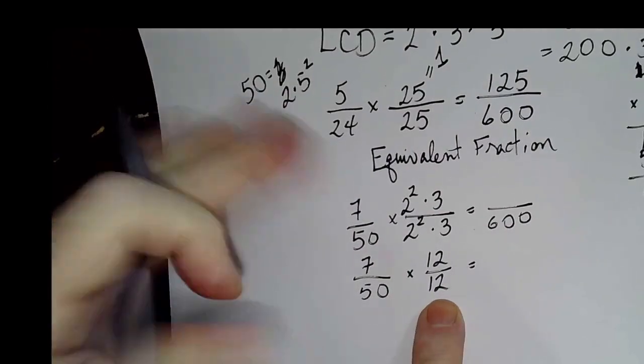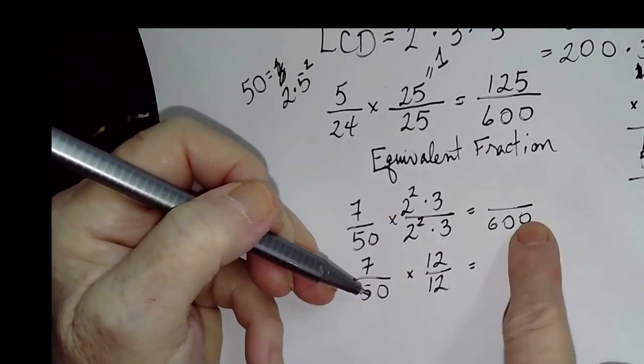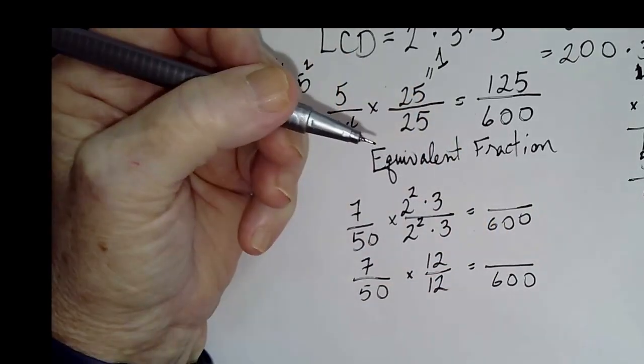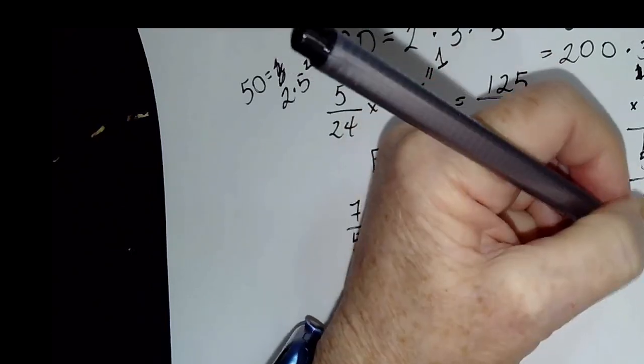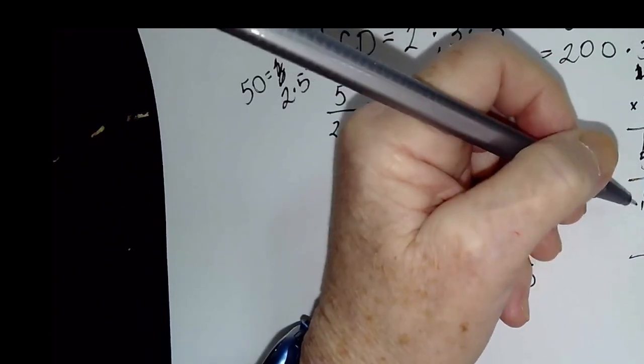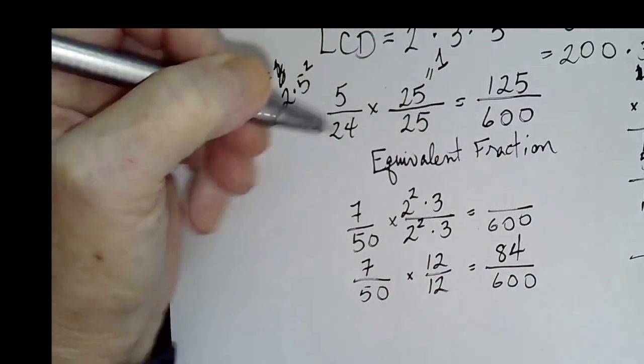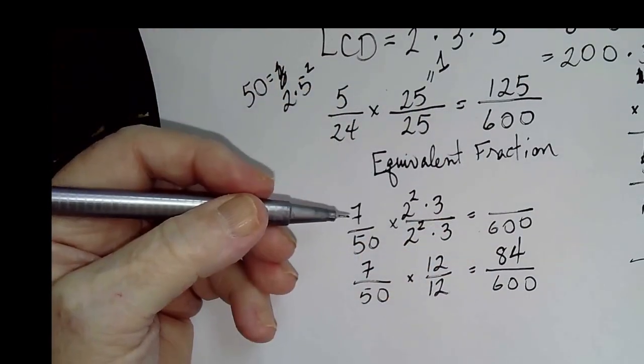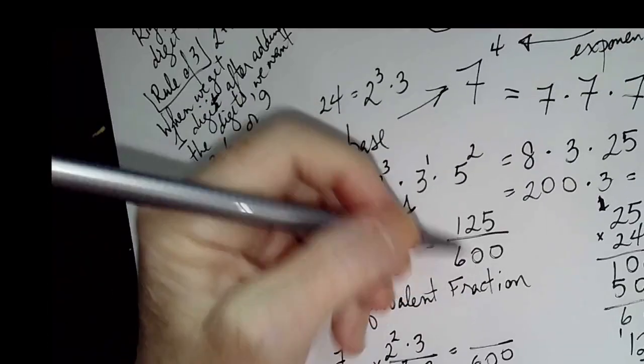If you remember your 12s, 12 times 5 really is 60, and the 0 hangs on. So we're good. 12 times 7. 7 times 2 is 14. 7 times 1 is 7, plus 1 is 8. So our two original fractions were 5 over 24 and 7 over 50.